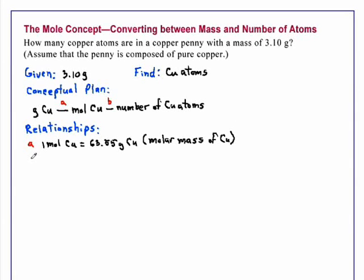The second relationship, B, is Avogadro's number. That is, 1 mole of anything, in this case copper atoms, is equal to 6.022 times 10 to the 23rd. And this is Avogadro's number.